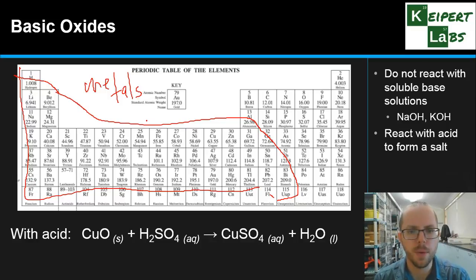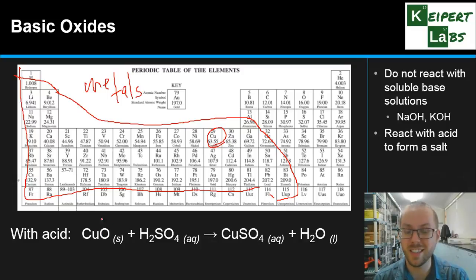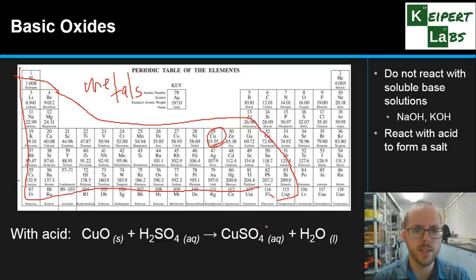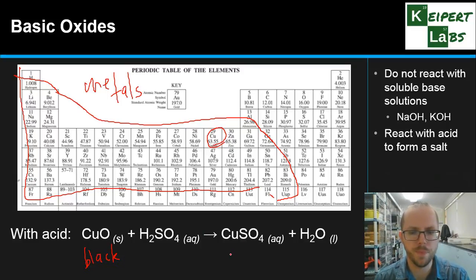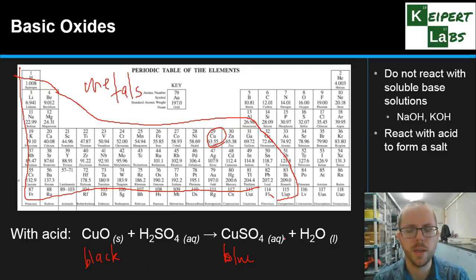We've picked out one example: copper oxide, which is in that region of the periodic table we're considering. Copper oxide, which is solid and insoluble in water, when we place it in sulfuric acid, it reacts to form copper sulfate and water. We notice that this copper oxide is black in colour, and then when we react with the sulfuric acid, we get a blue solution — we can notice the difference there as we change from one form to another. That's how we would classify basic oxides.